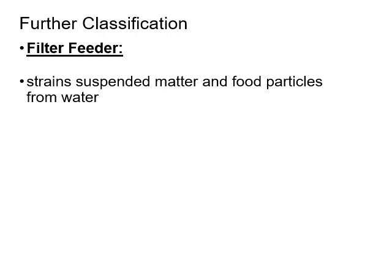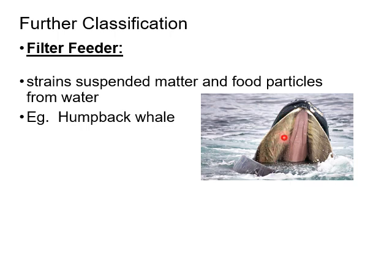Filter feeders are organisms in water that strain food or nutrient particles out of the water using structures in their bodies that act like strainers. A humpback whale is a great example: along its sides it has baleen — long strands that form a netting. The humpback whale swims along and strains plankton particles out of the ocean, then its great big tongue sweeps the plankton into its belly.